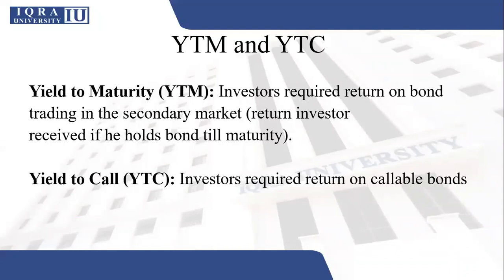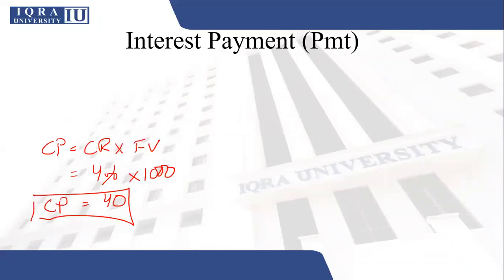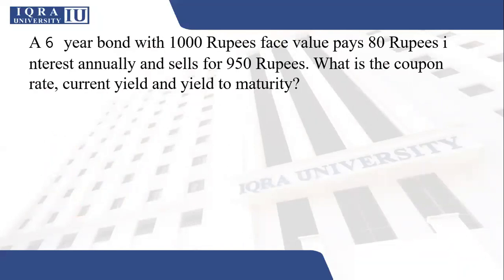YTM is your discount rate — the market interest rate used for discounting purposes. This is how you can figure out the market interest rate. Now let's look at an example: a six-year bond with a face value of 1000 rupees pays 80 rupees interest annually and sells for 950 rupees. Find the coupon rate, current yield, and yield to maturity.